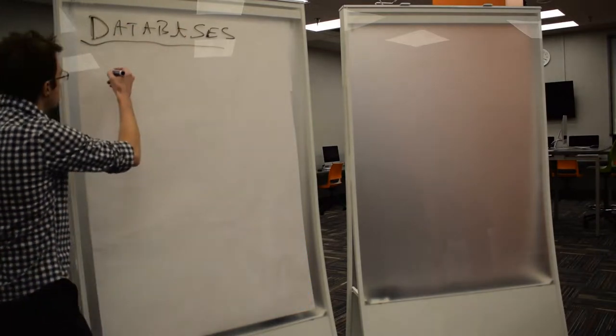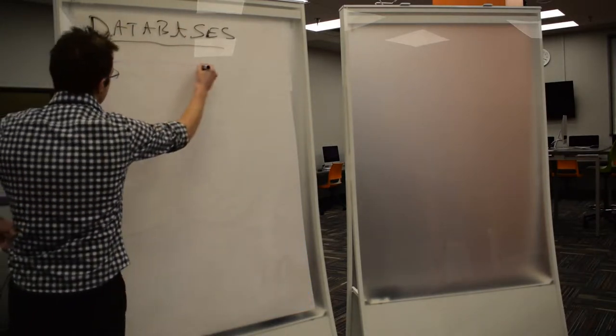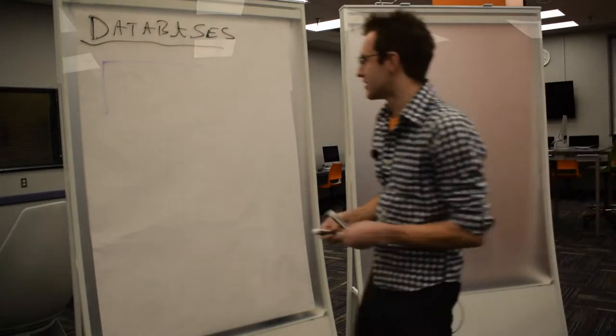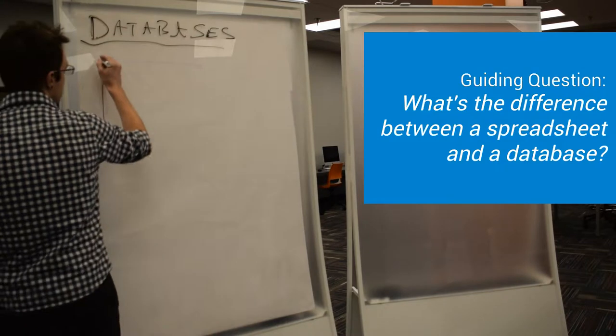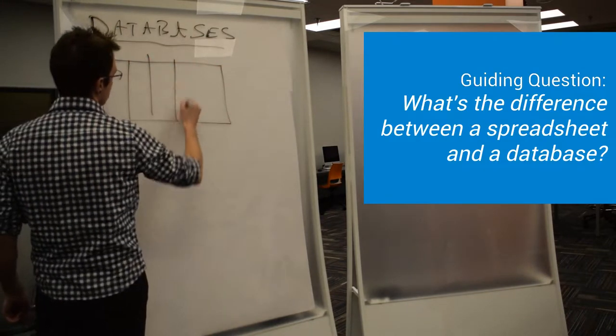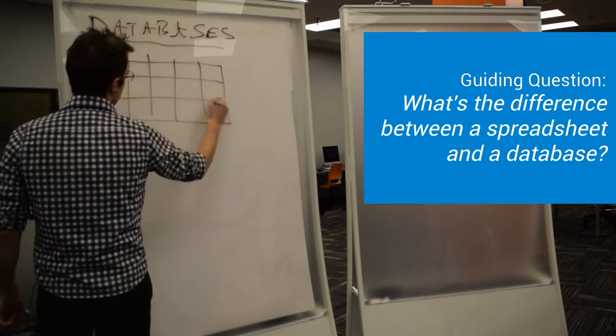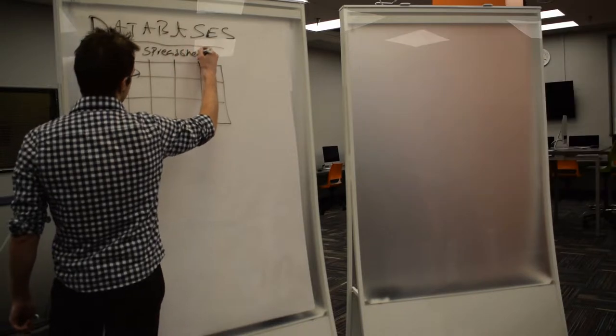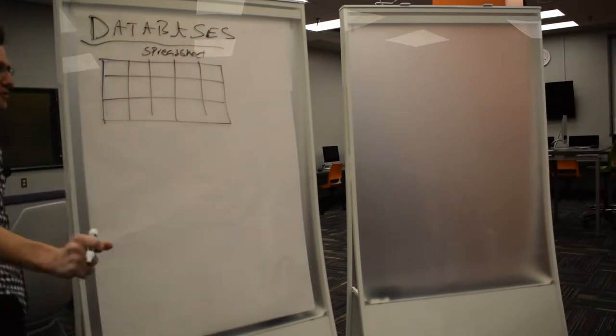So the question I want you to be able to answer at the end of today is what's the relationship between a spreadsheet and a database? What's your idea so far? What do we know about what a database does? How do you think it does that? What structure?